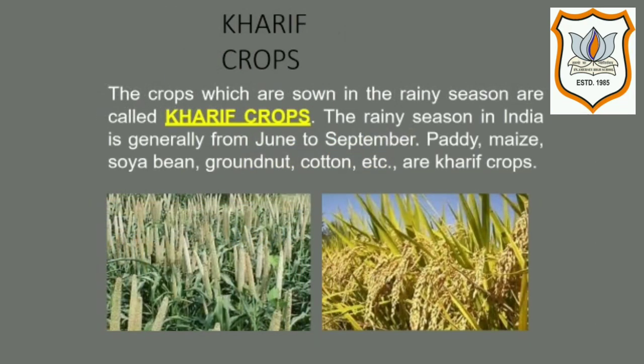The crops which are grown in the rainy season are called Kharif crops. The rainy season in India is generally from June to September. The sowing of Kharif crops starts in June or July at the beginning of the southwest monsoon, because these crops — particularly paddy — require a substantial amount of water. Kharif crops are harvested at the end of the monsoon season, during September or October. Some examples of Kharif crops are paddy, maize, millet, soybean, groundnut, and cotton.